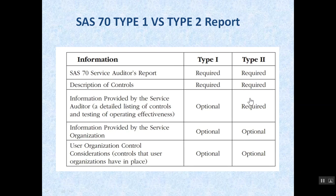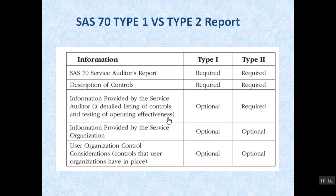Here you can see the difference between SAS 70 Type 1 and Type 2 reports. In a Type 2 report, information provided by the service auditor is mandatory, which includes a detailed listing of controls and testing of operating effectiveness.